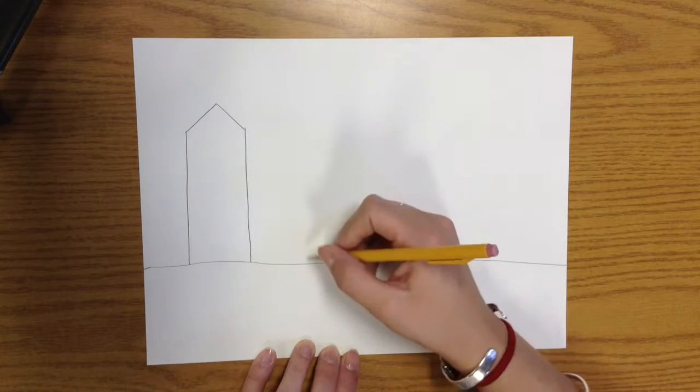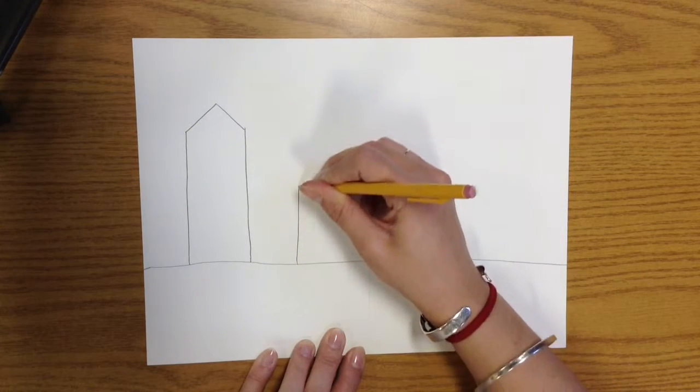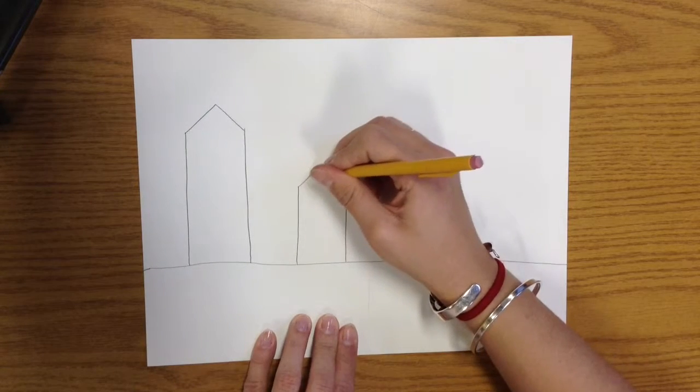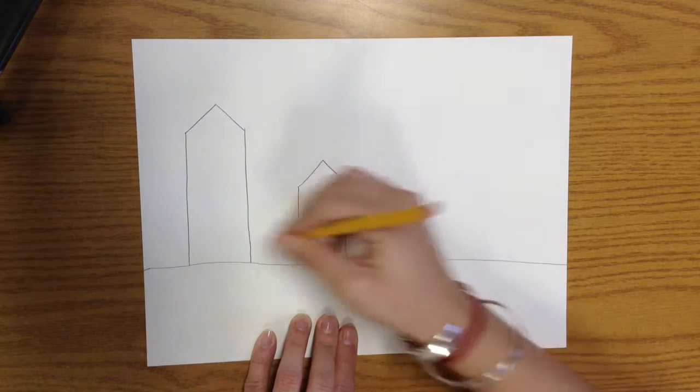So let's do it again. How about over here, I'll make a shorter one. Straight line up, three fingers, straight line up, and a V on top. Now I have two buildings.